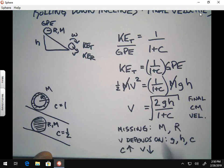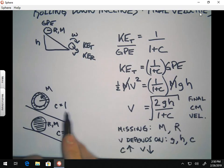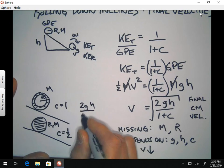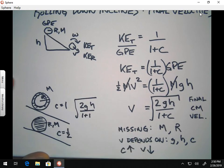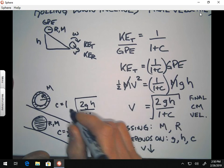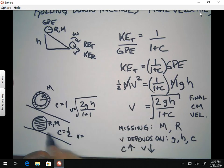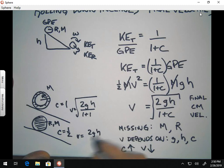When you find the final velocity for the hoop, you're going to get 2gh over one plus one. When you get the final velocity for the disk, you get 2gh over one plus one-half.